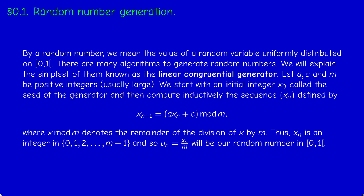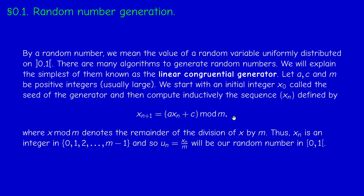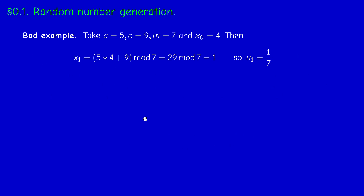Let me explain this with a simple example — it's a bad example, but it helps understand what's happening. Take A=5, C=9, M=7, and an initial seed of 4. For n=0: x₁ = (5×4 + 9) mod 7 = 29 mod 7 = 1. Dividing by M=7 gives our first random number: 1/7.